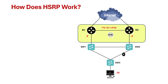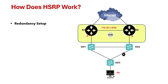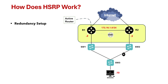To set up HSRP you need at least two devices. These two devices can be routers or layer three switches. One device is the active router, which is responsible for forwarding the packets, and the other device is the standby router, which is ready to take over if the active router fails.